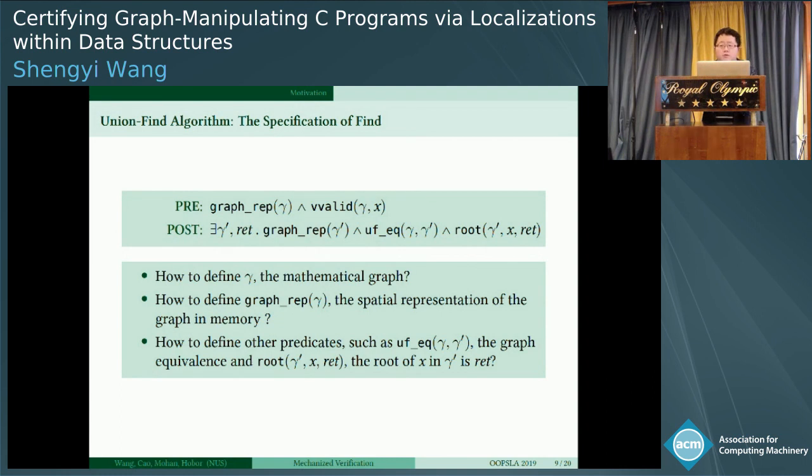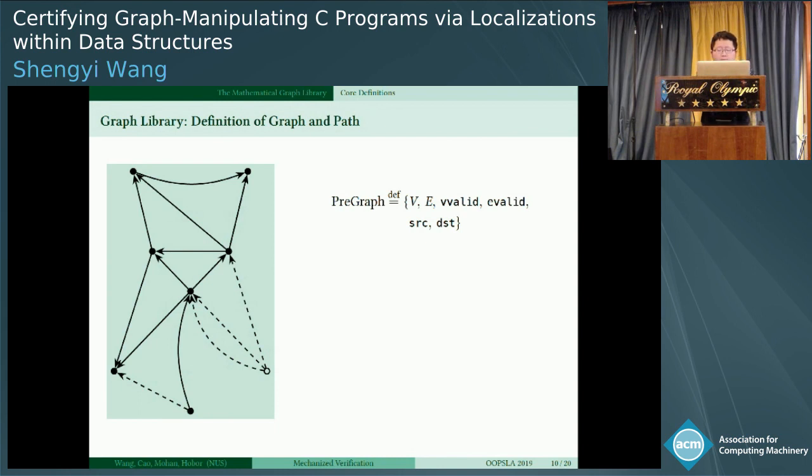First is the definition of mathematical graph. Here is our definition, basically from the standard textbook. V is a type of vertex, E is type of edges. Source and dst are two functions which return the source and the destination vertex over a certain edge. But during the verification we find that it is important and necessary to specify partial graphs which lack some part, represented by dashed lines and empty circles. So we add two predicates, v_valid and e_valid, to indicate the validity of vertices and edges.